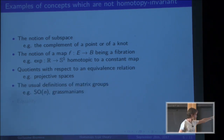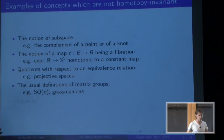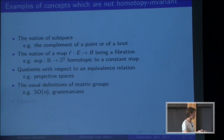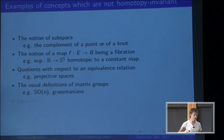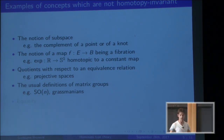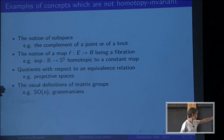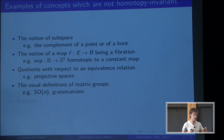For example, projective spaces are defined as the quotient of Sⁿ by the antipodal map, but when n is odd the antipodal map is homotopic to the identity, and everything is supposed to be invariant under homotopy, so there's something wrong. Matrix groups like S¹ and Grassmannians, which are very important in homotopy theory, also have point-set topology definitions that we'd need to replace.